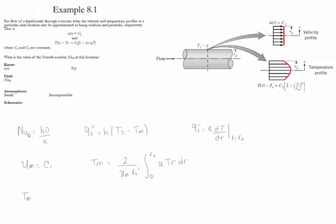we obtain Tm is equal to 2 divided by C1 r0 squared integral. This is C1, and the temperature distribution is equal to Ts plus constant C2, 1 minus r divided by r0 to the second power.